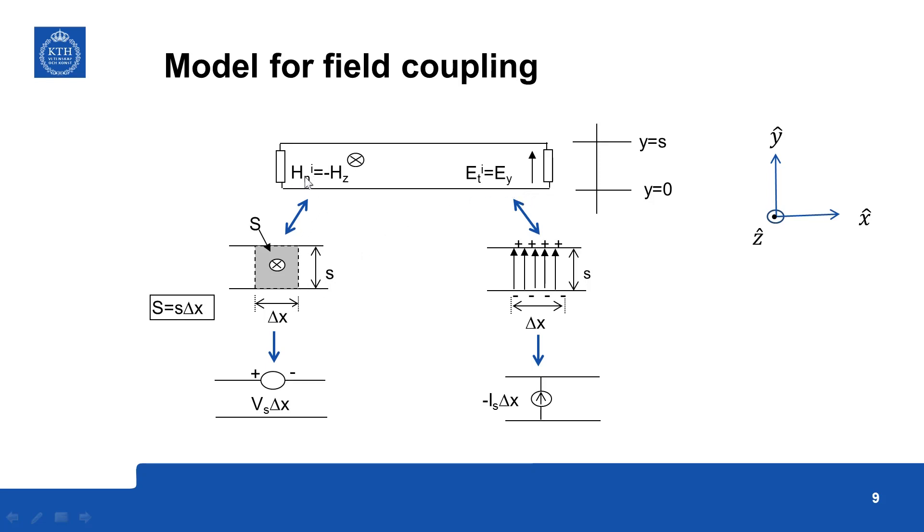So the normal component of the magnetic field, you take a small section of the line delta x, this is the x coordinate, so small section of delta x, so you have an area enclosed, so the magnetic field is going through this area, so this will create a voltage from Faraday's law.